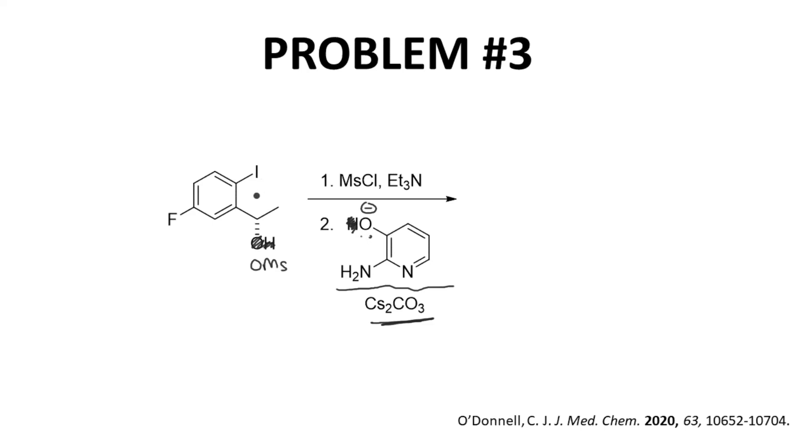This is a secondary leaving group, our mesolate, so expecting an E2 would be reasonable. In this case, however, in part because of the pi system of the neighboring ring and something called the phenacyl effect, this secondary leaving group will do an SN2. Remember that we will get inversion of stereochemistry during the reaction.